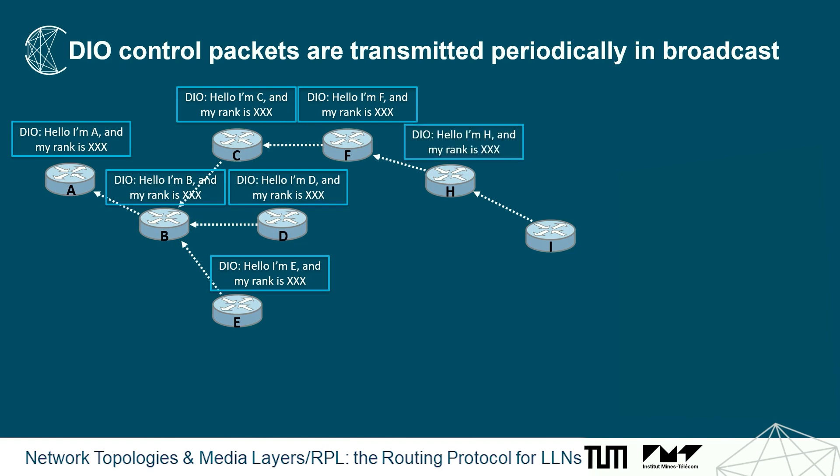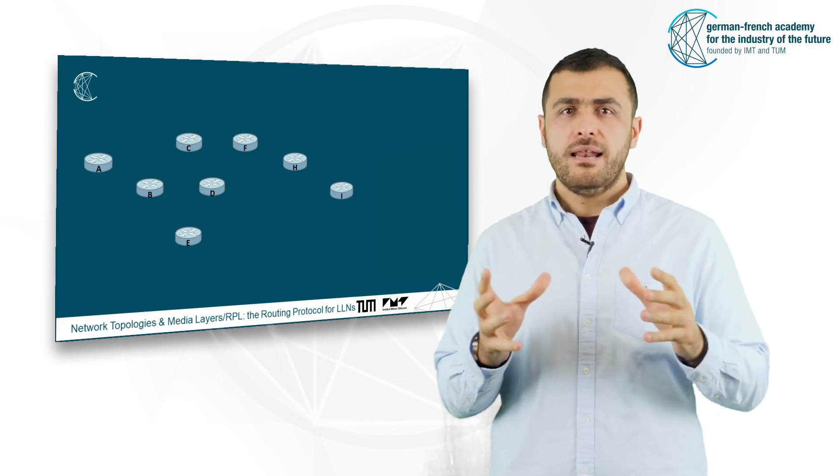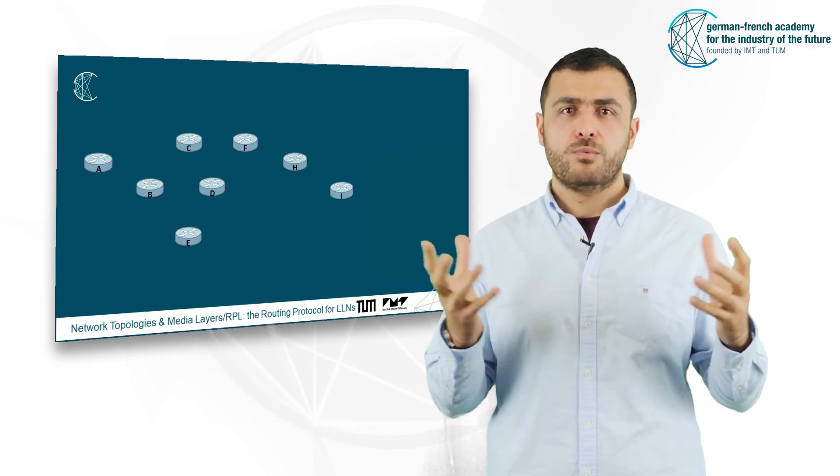This information is sent in periodic packets that are called DIO. Let's take an example to see how it works.